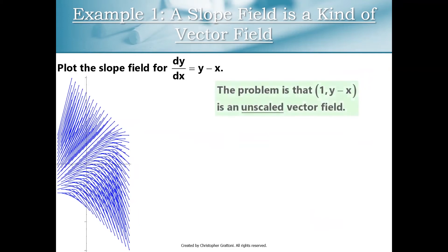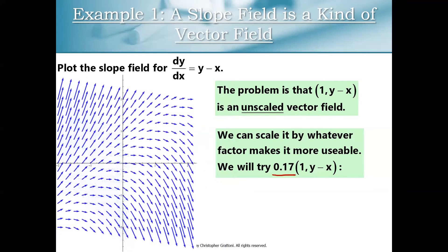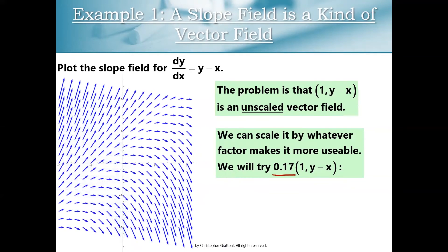So our fix is to say instead of plotting an unscaled vector field, we could scale down our vector field. Basically it's a trial and error process. You just try some numbers until you settle in on a number that makes the plot look pretty good. So 0.17, it's not magical. I literally went into Mathematica and tested out numbers until I had a picture that I liked the look of. And there it is. Now this looks a lot more like the slope fields that you plotted in your Calc BC class last year.